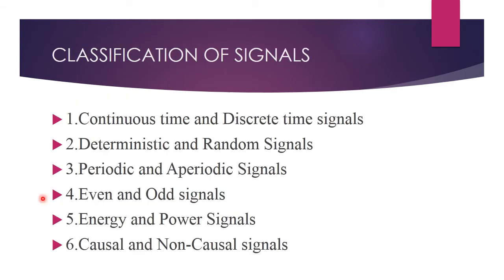Next, we are going to see the classification of signals. Signals are classified into six types: (1) continuous time and discrete time signals, (2) deterministic and random signals, (3) periodic and aperiodic signals, (4) even and odd signals, (5) energy and power signals, and (6) causal and non-causal signals.